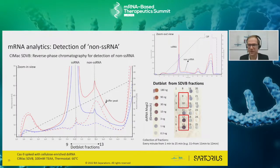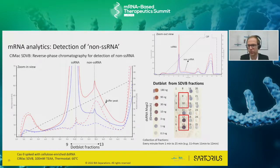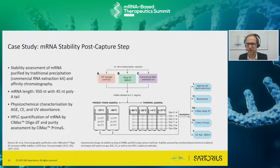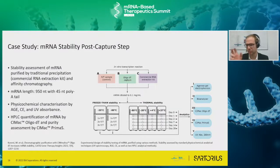For double-stranded RNA: there are solutions for purification and analytics. As is well established in the community, reverse phase works excellently. Here I show an example where the main peak - single-stranded RNA - is nicely separated from what we call non-single-stranded RNA, verified by dot blot.